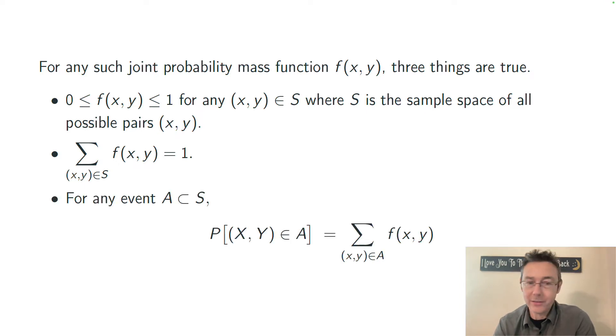Finally, if you have any event, let's call it A, this is going to consist of a countable number, possibly finite number of outcomes. And so you compute the probability of the event just by adding up all of the individual values of that joint probability mass function.